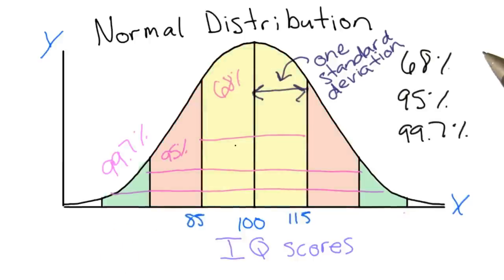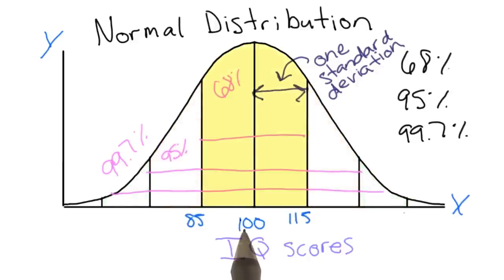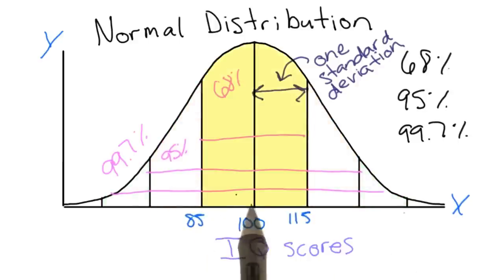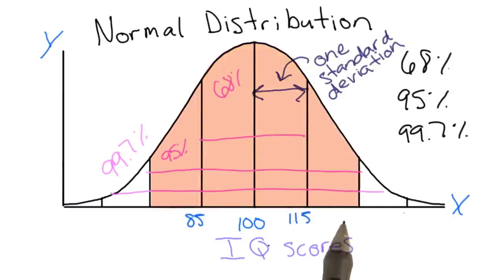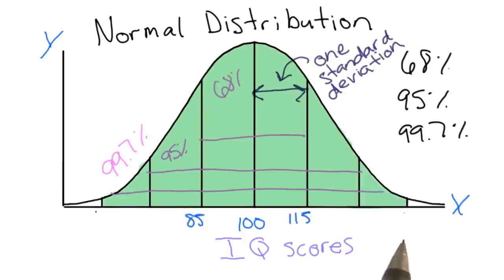We have the 68, 95, and 99.7 rule. That means 68% of the population falls between one standard deviation below and one standard deviation above the mean. 95% falls from two standard deviations below to two standard deviations above the mean. And 99.7% falls from three standard deviations below to three standard deviations above the mean.